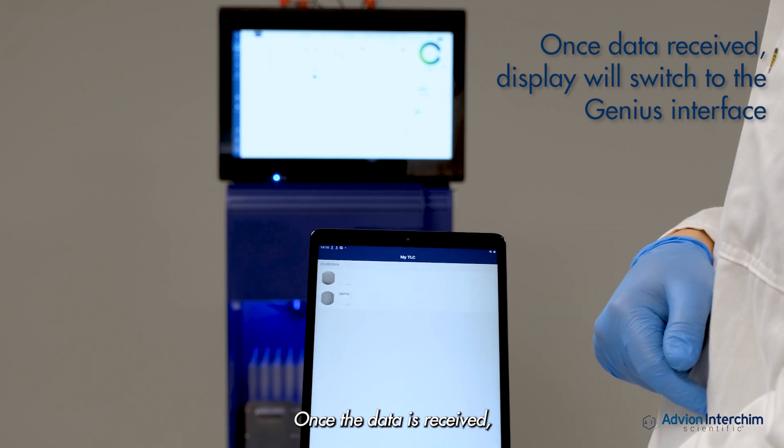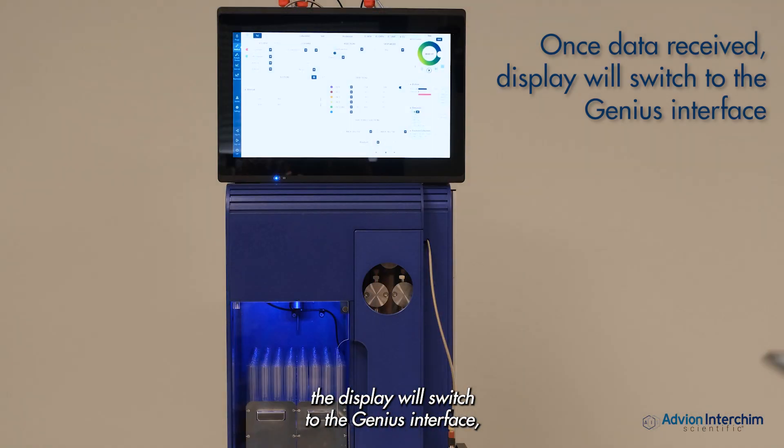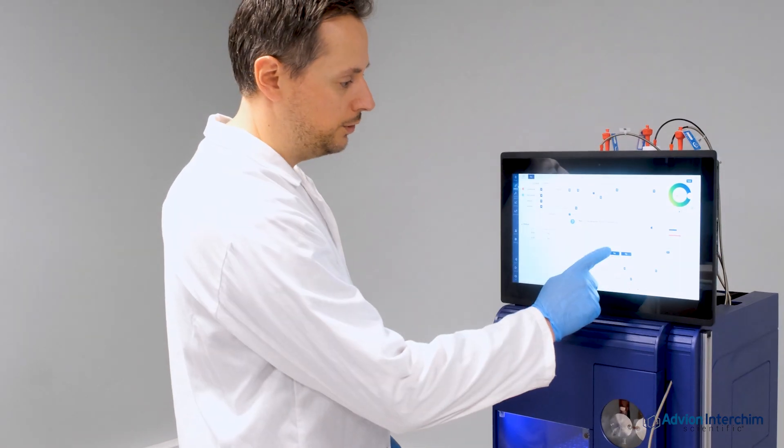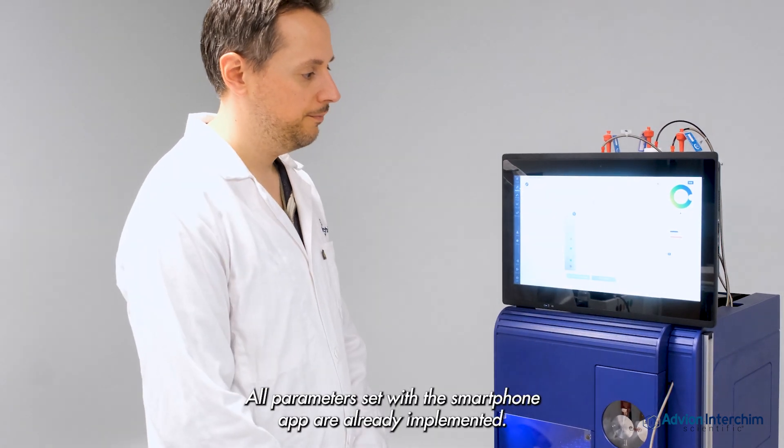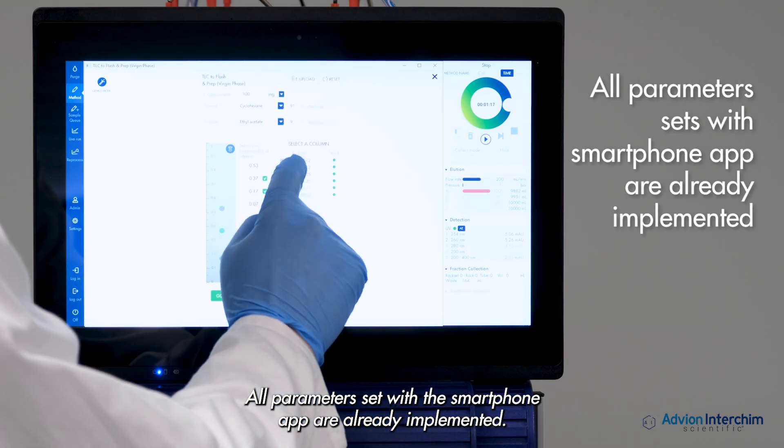Once the data is received, the display will switch to the Genius interface. All parameters set with the smartphone app are already implemented.